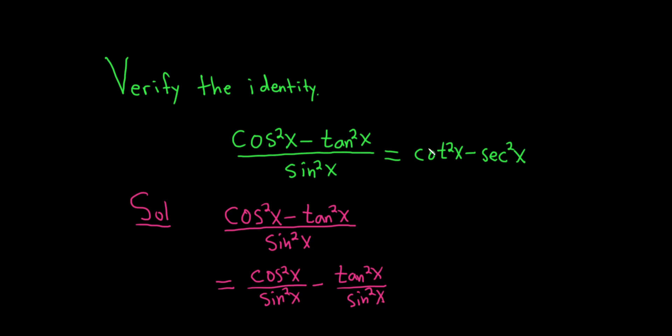And the reason I did that is because we have a cotangent squared here. So cosine over sine is cotangent. So cosine squared over sine squared is cotangent squared. So that is a good first attempt.